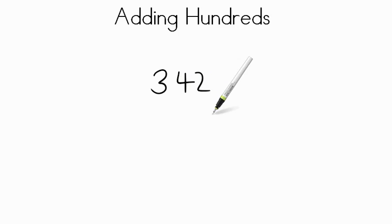There are three digits. Let's review the place value of each one of these numbers. So the two here is the same as two ones. And the four here is the same as four tens. And then the three here is the same as three hundreds.